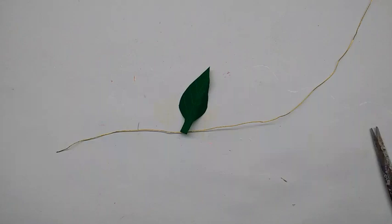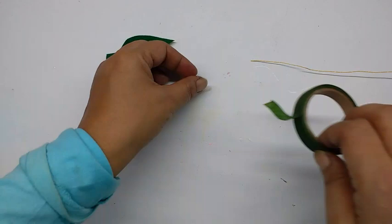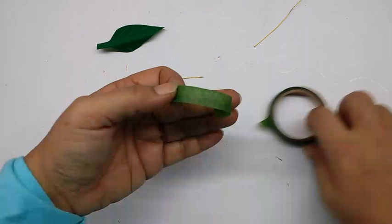Now cut another piece from the thin wire, six centimeter long. Take the green tape again and cover it.